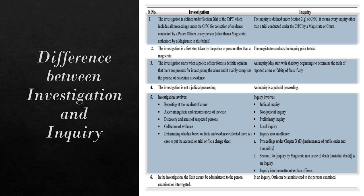Whereas inquiry involves several types: judicial inquiry, non-judicial inquiry, preliminary inquiry, and local inquiry. The important one is inquiry into an offense. There are two types of offenses where inquiry can be conducted: first, proceedings under Chapter 10(d) — that is, maintenance of public order and tranquility; and second, Section 176 — that is, inquiry by a magistrate into the cause of death, which essentially covers custodial death. The last is inquiry into matters other than an offense.